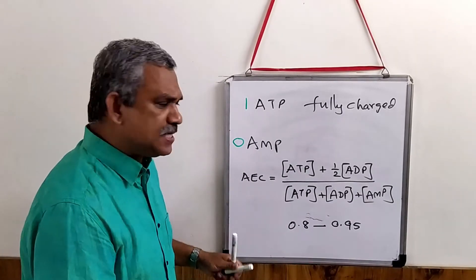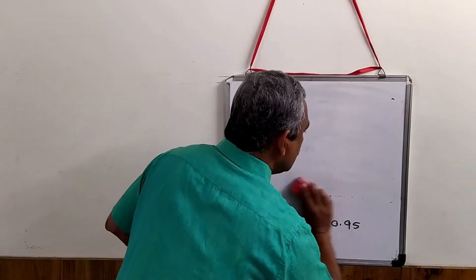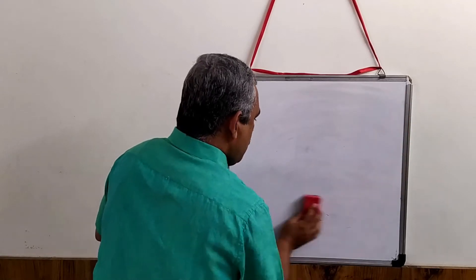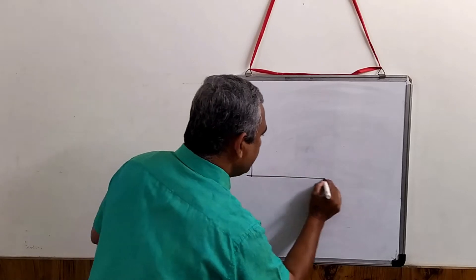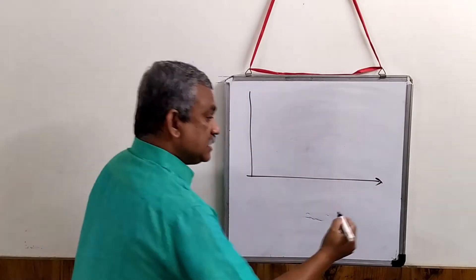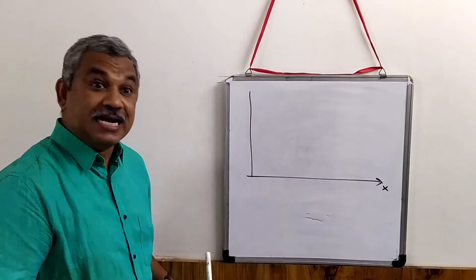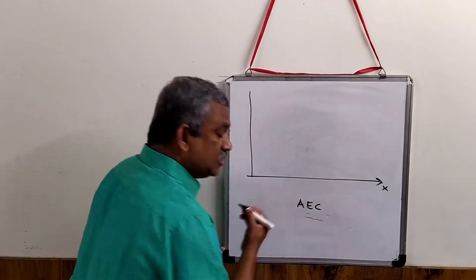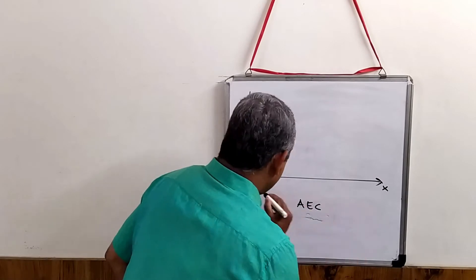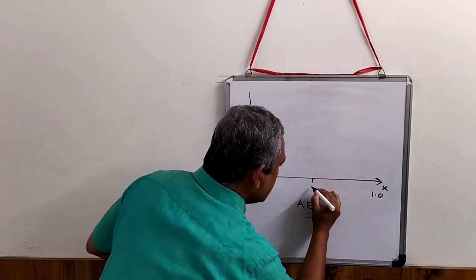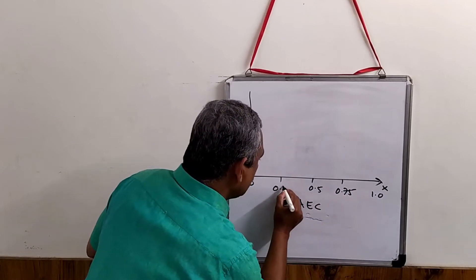On the x-axis, we take the adenylate energy charge. So therefore, it will vary from 0 to 1. So this will be 0.5, this will be 0.75, this will be 0.25.